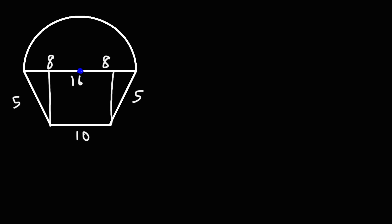Now let's move on to our last example. We have a composite figure that has a similar shape to a cupcake. Go ahead and calculate the area. We can see that the diameter of this semicircle is 16 units, which means the radius is going to be 8. We have a trapezoid here, or we can break it up into two triangles and a rectangle.